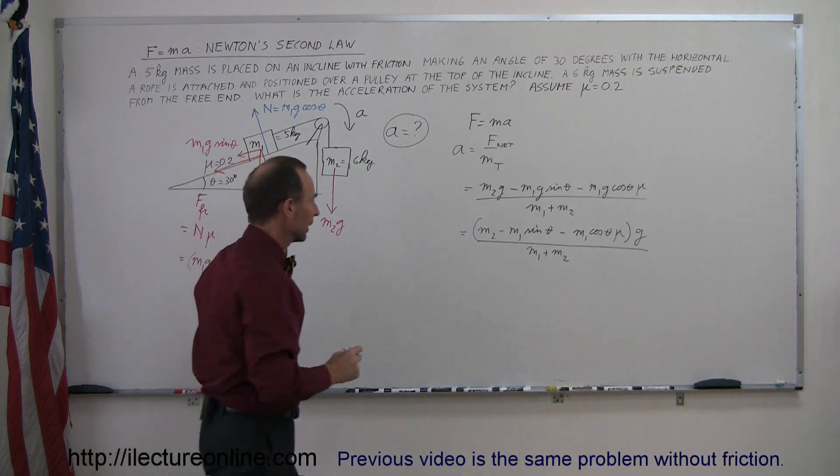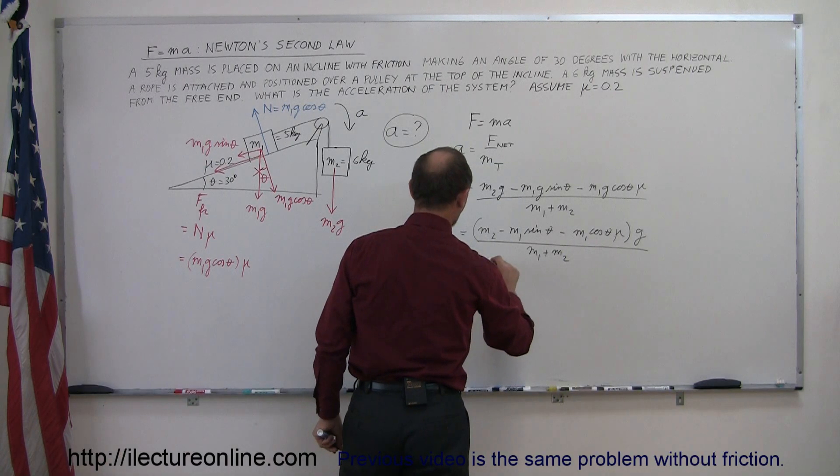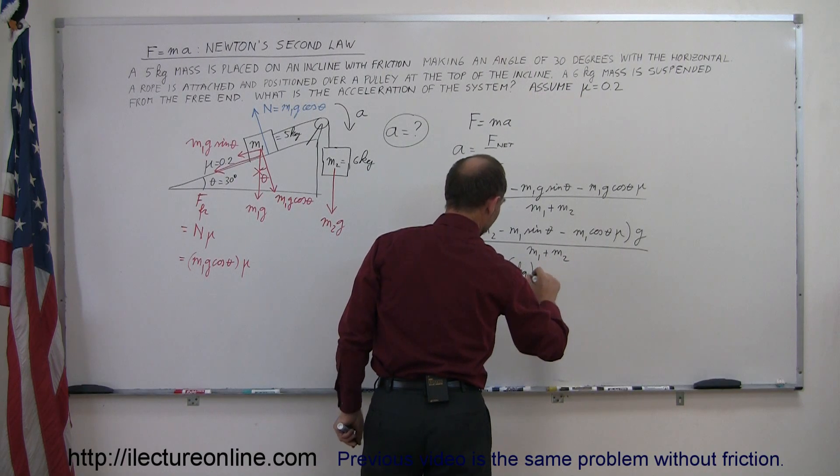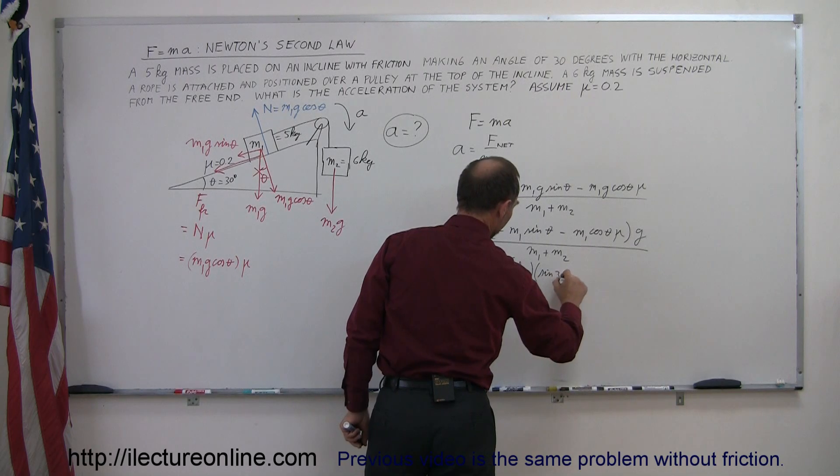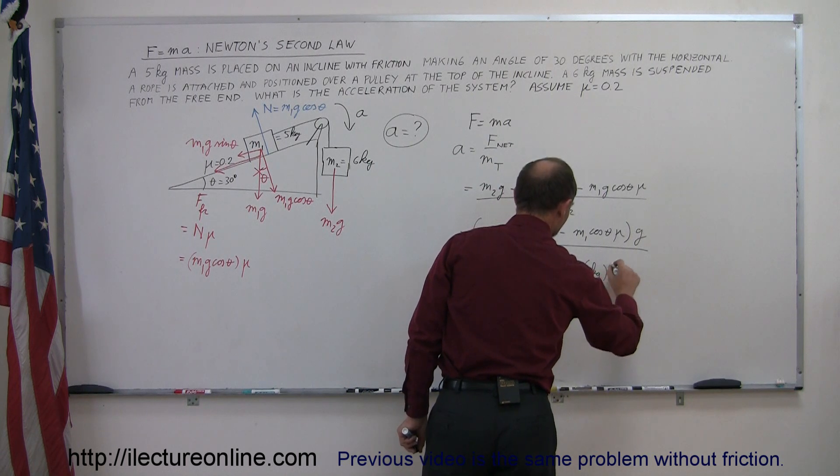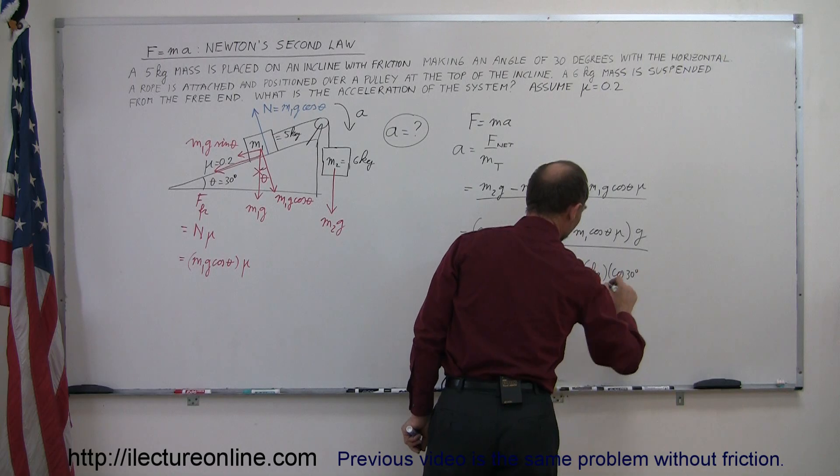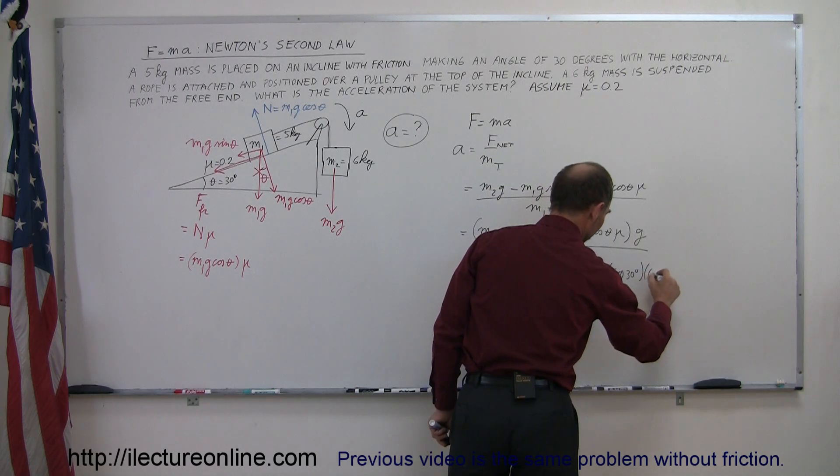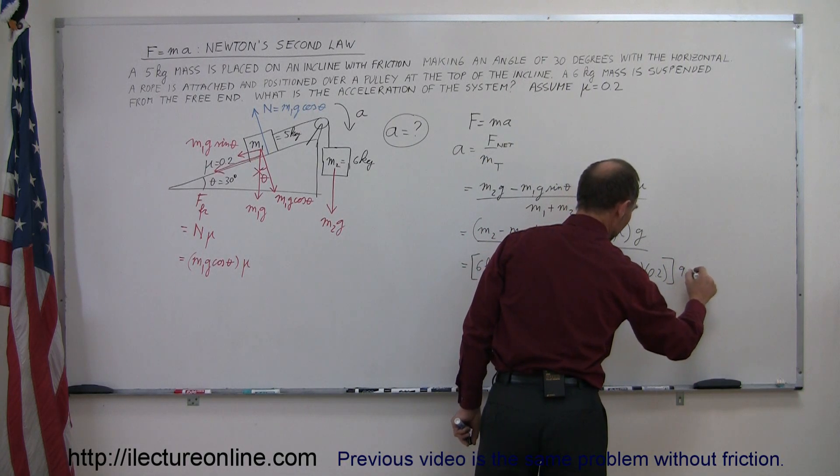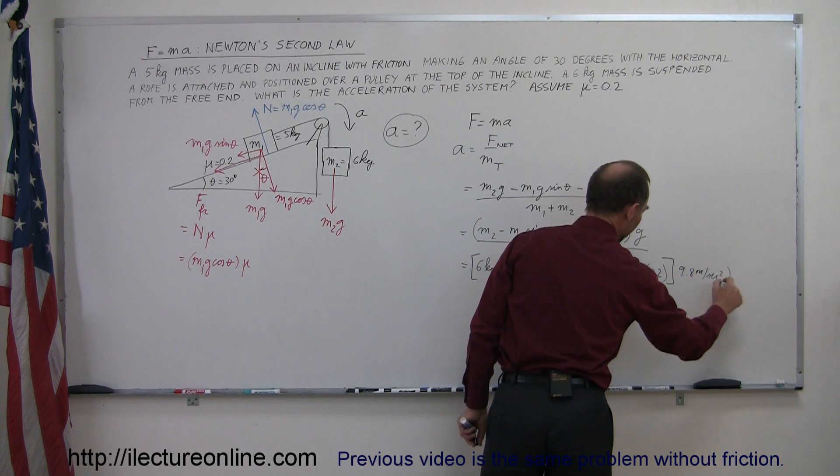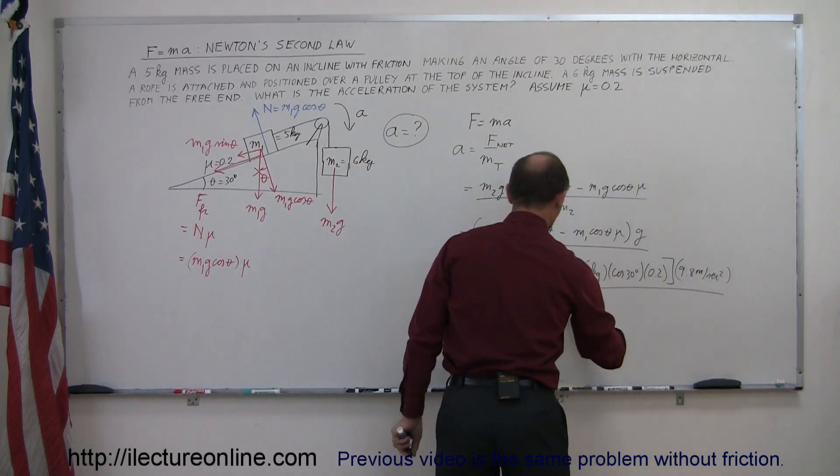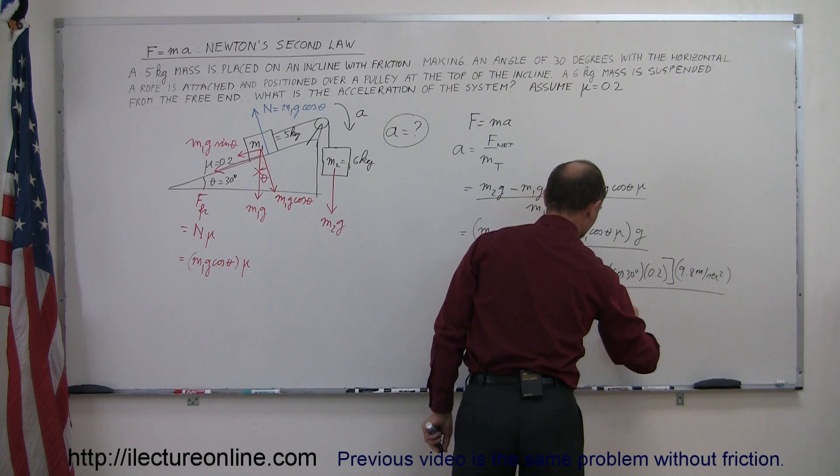m2 equals 6 kg, minus m1 equals 5 kg, multiply times the sine of 30 degrees which by the way is 1 half, minus 5 kg times the cosine of 30 degrees which is 0.866, times 0.2 for the coefficient of friction. And then this whole thing multiply times g which is 9.8 meters per second squared. And then we divide that by the sum of the two masses, which is 5 kg plus 6 kg.